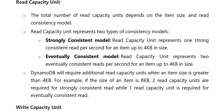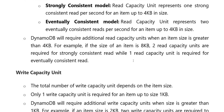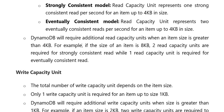Strongly consistent model me, one unit represent kari hain one strong consistent read per second for an item up to 4KB in size. Eventually consistent model me, one read capacity unit represent kari hain two eventually consistent reads per second for an item up to 4KB in size. DynamoDB additional read capacity units require kari hain jab item size greater than 4KB ho. For example, agar item size 8KB hain to two read capacity units required hain strongly consistent ke liye, or one read capacity unit for eventually consistent read.